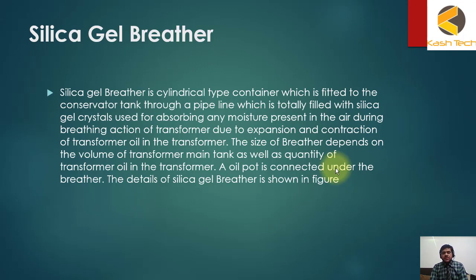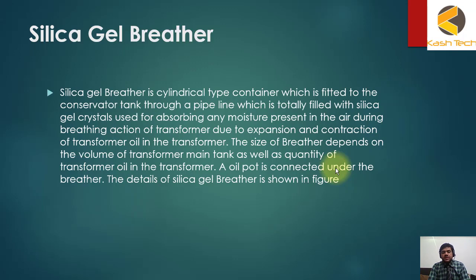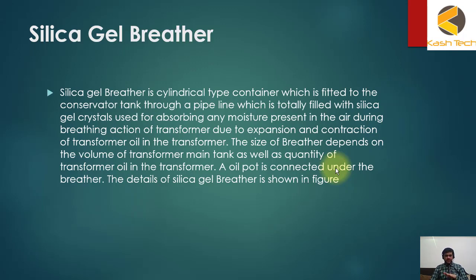Due to expansion and contraction of transformer oil, the size of the breather depends on the volume of the transformer main tank as well as the quantity of oil in the transformer. The conservator tank is basically there to allow expansion of transformer oil. When the transformer oil expands and contracts, it will breathe in or breathe out air — just like breathing.